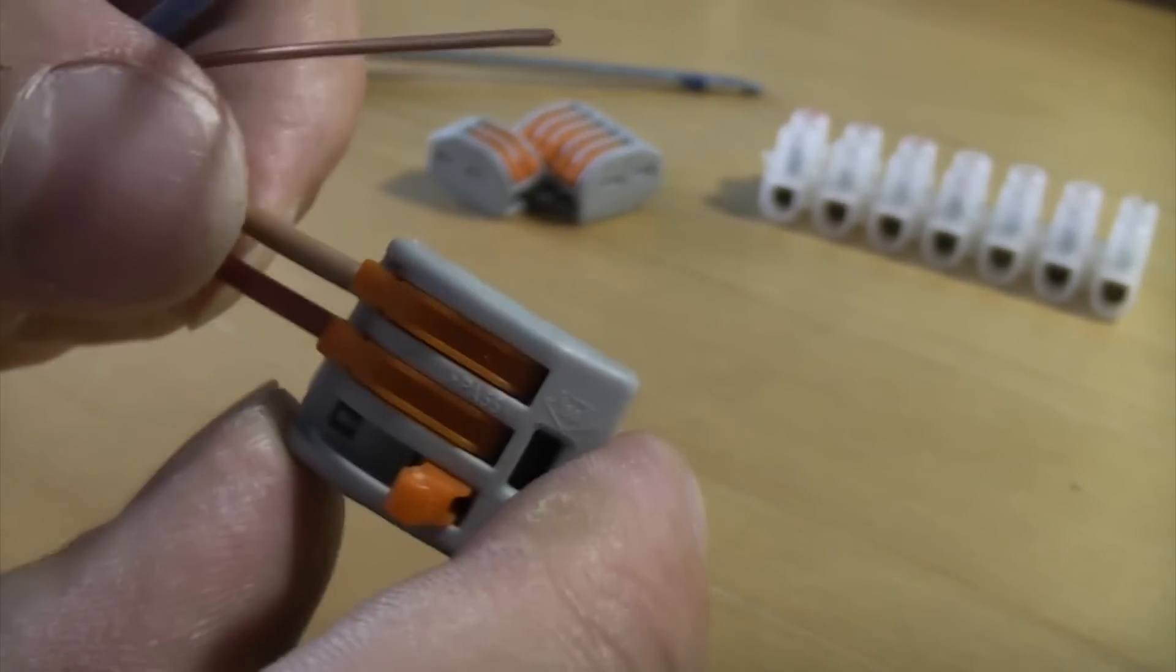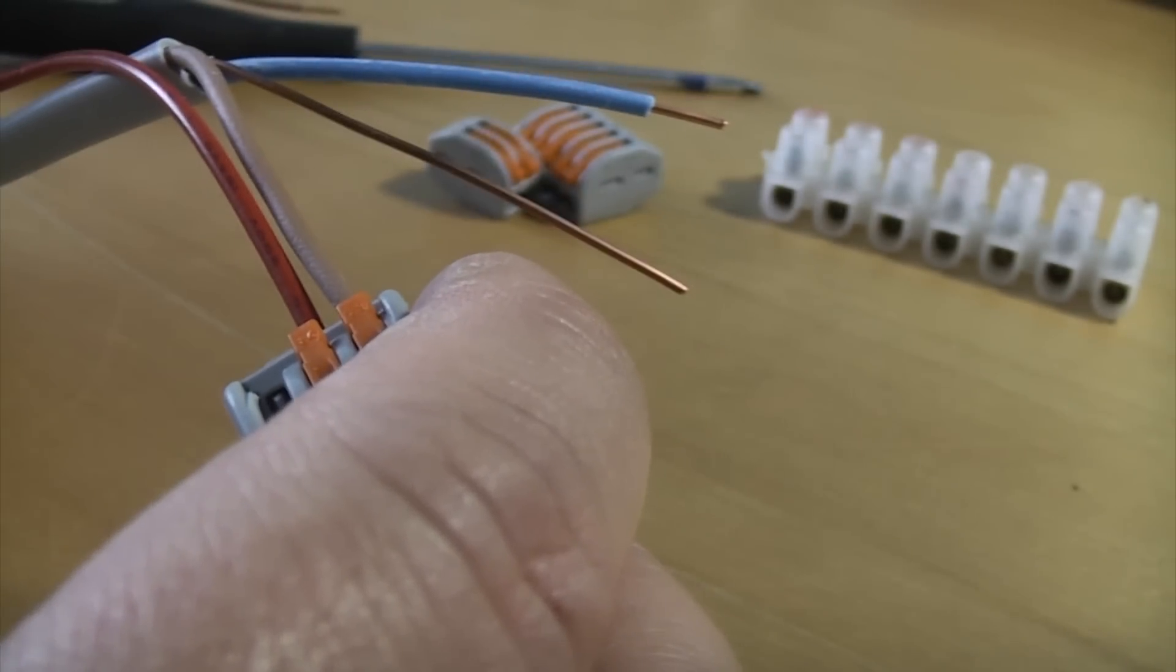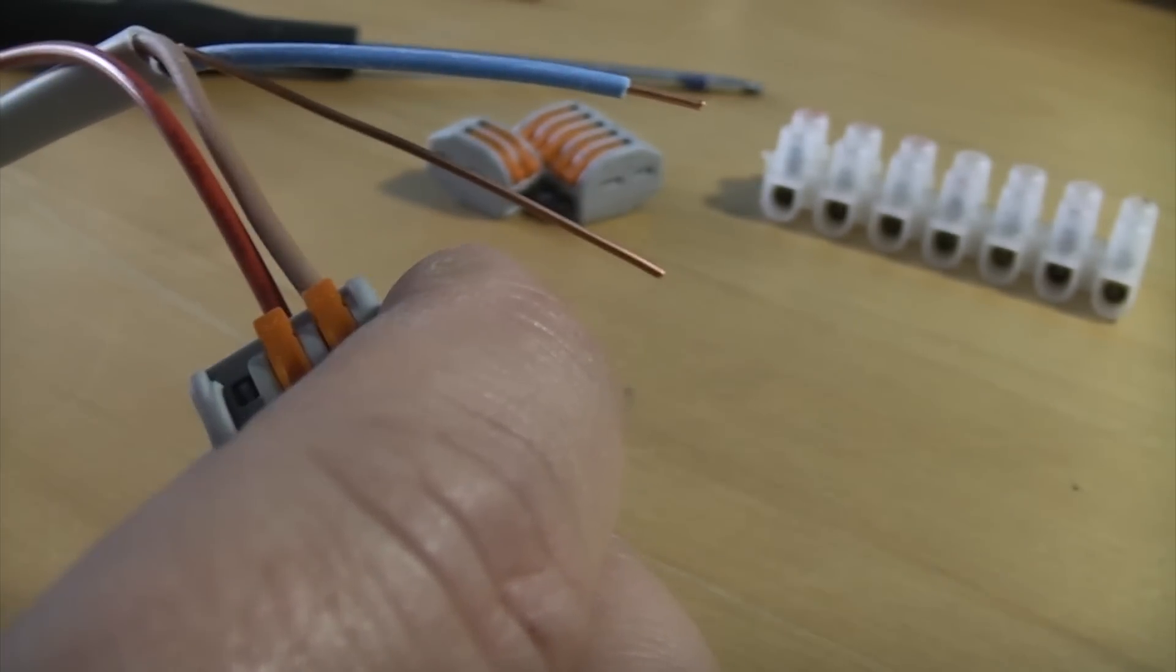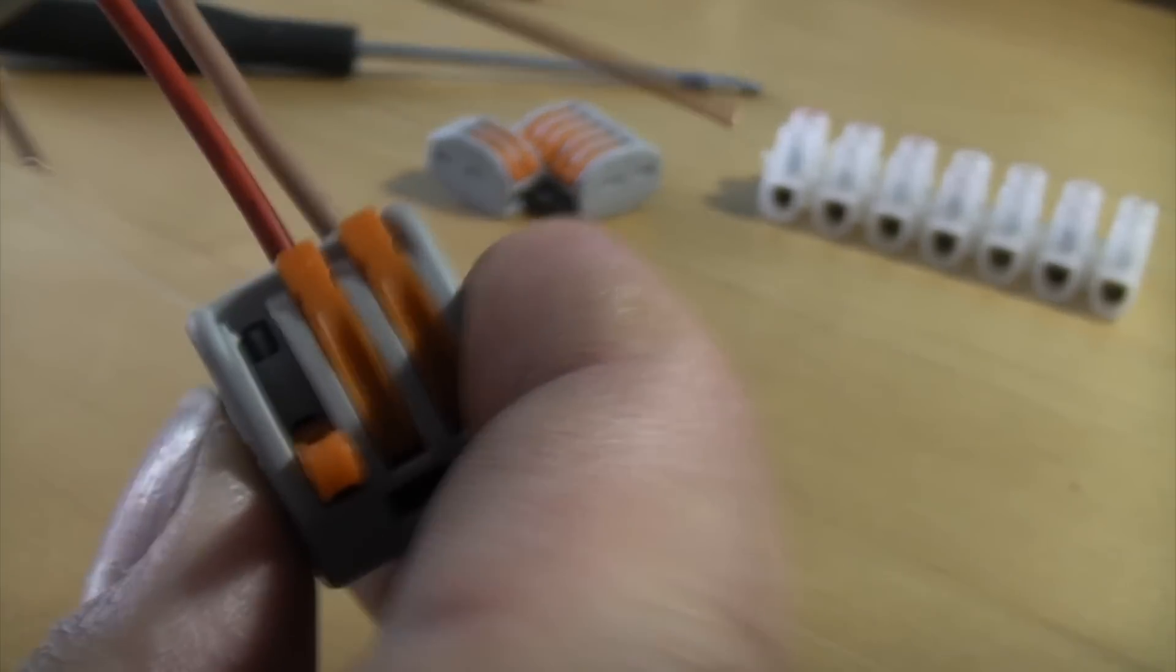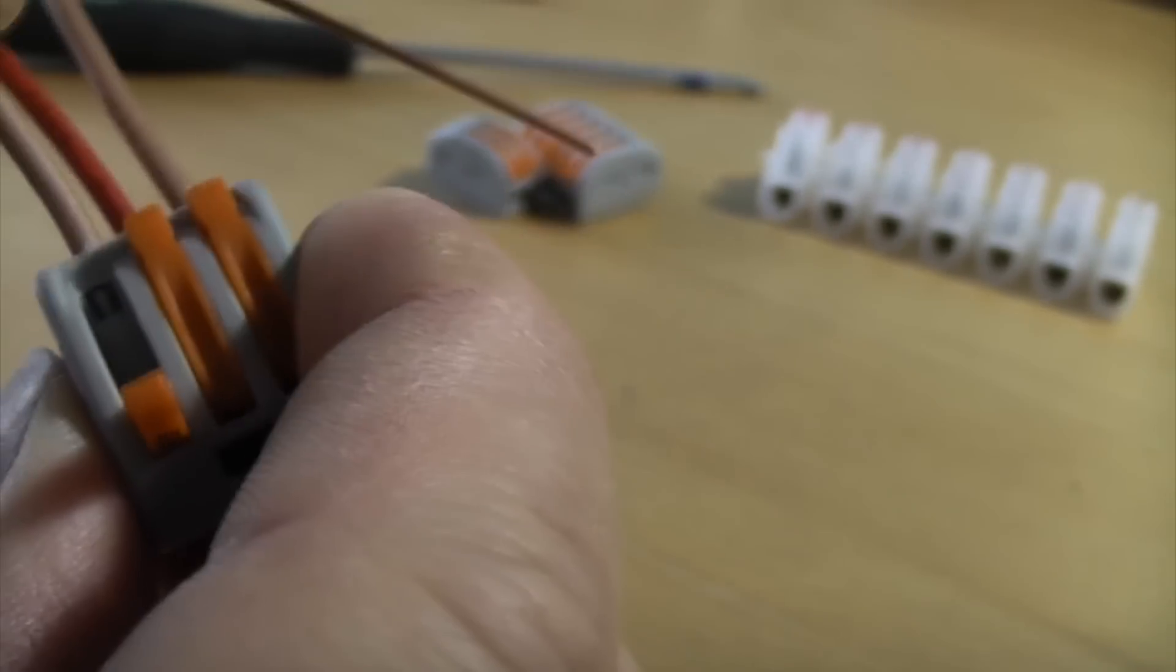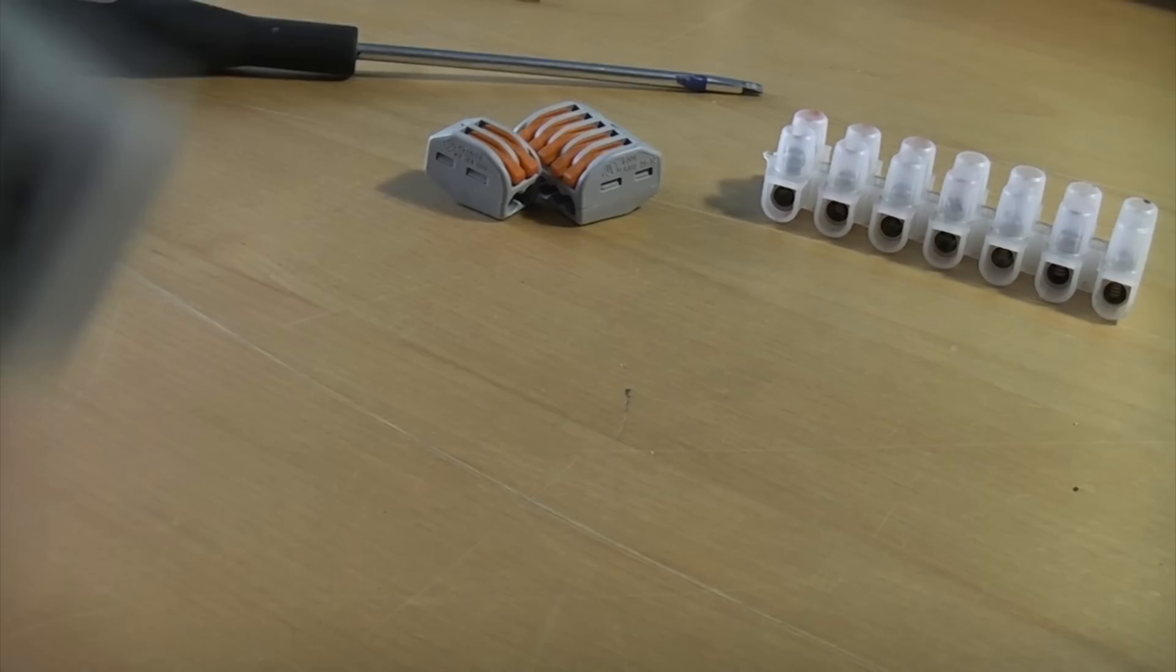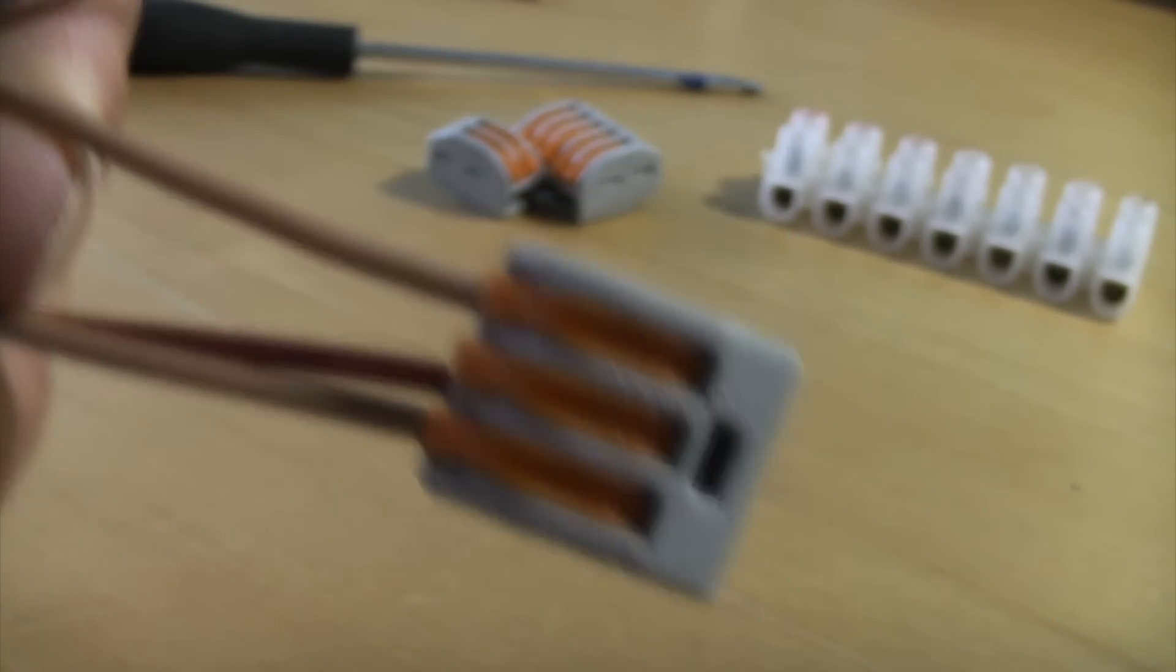Obviously this one is a three pole connector so it can accept three wires. You just push it in all the way and then close the lever and that's it. It's as easy as that. You don't need a screwdriver. You just strip your wire, push it in, close the lever and that's it. You've made the connection.